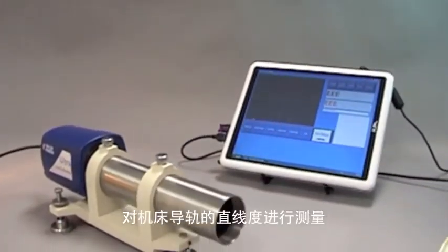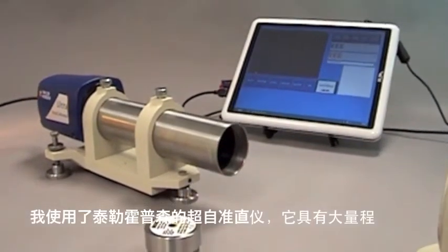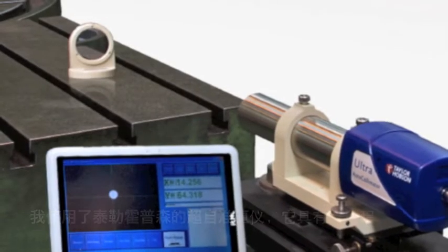For straightness measurement of a machined slideway I would use the Taylor Hobson Ultra Autocollimator with its wide range and high accuracy.